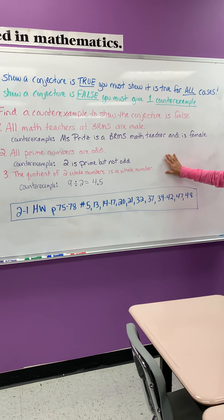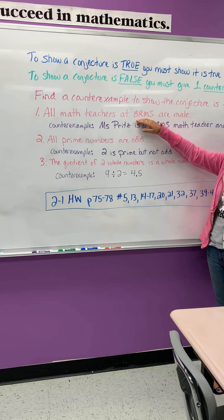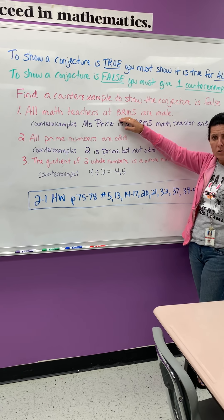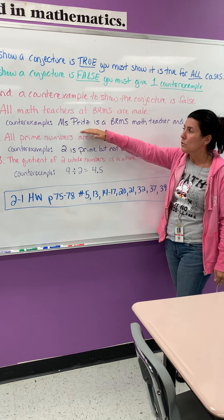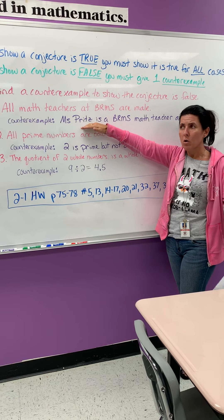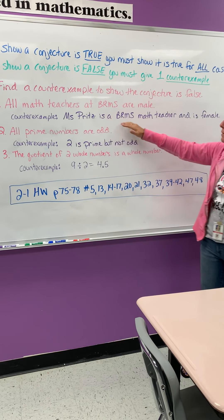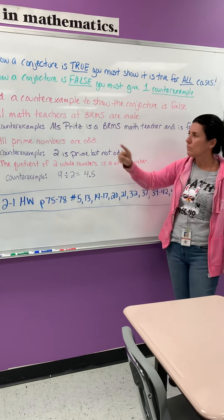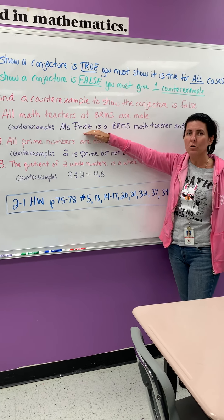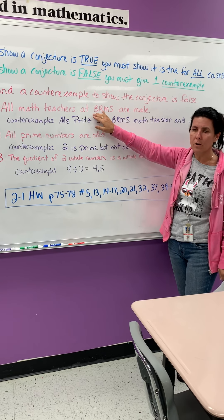So here's some good examples. Hopefully this will make sense then. All math teachers at Blue Ridge Middle School are male. Well we know that that is false, but in order to show that's false, we need to give one example. So you can just say Ms. Fritz, or to make it a complete statement, Ms. Fritz is a Blue Ridge Middle School math teacher and is female. So one example that shows that there is a teacher at Blue Ridge Middle School who teaches math that is not male is enough to show that the statement is false.